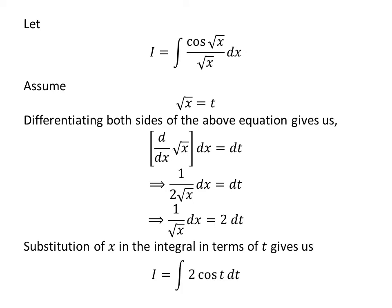Substitution of square root of x by our assumed value t and 1 upon square root of x times dx by 2 dt in the integral I gives us I equals the integral of 2 cosine t dt.